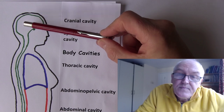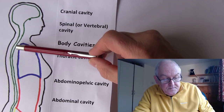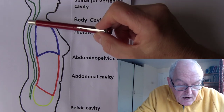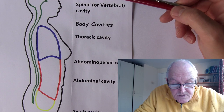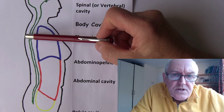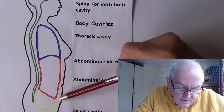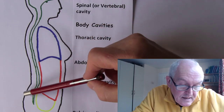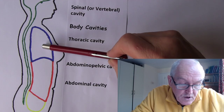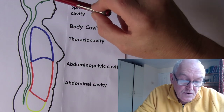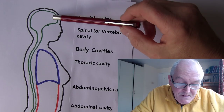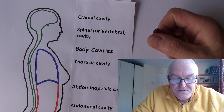At the back we have the cranial cavity, continuous with the vertebral cavity going down, housing the spinal cord. The brain is in the cranial cavity; the spinal cord and large spinal nerves are in the vertebral or spinal cavity. This back surface of the body is posterior, known as the dorsal surface, so these are the dorsal cavities — as opposed to the ventral cavities at the front.